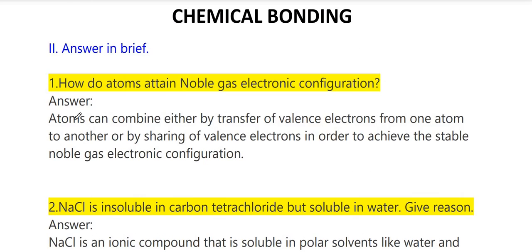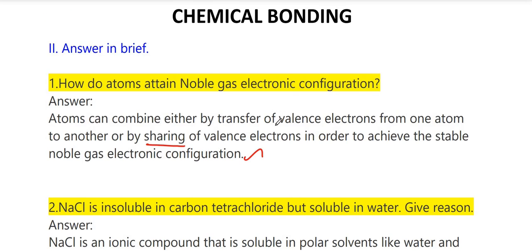Answer briefly. First question: how do atoms attain noble gas electronic configuration? Atoms can combine either by transfer of valence electrons from one atom to another, or by sharing of valence electrons, in order to achieve the stable noble gas configuration — either by transfer or sharing.